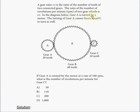In the diagram below, gear A is turned by a motor. The turning of gear A causes gears B and C to turn as well. If gear A is rotated by the motor at a rate of 100 RPM, what is the number of revolutions per minute for gear C?